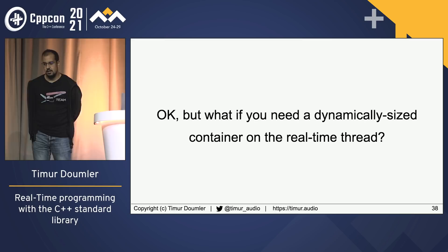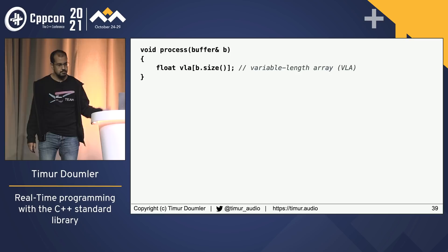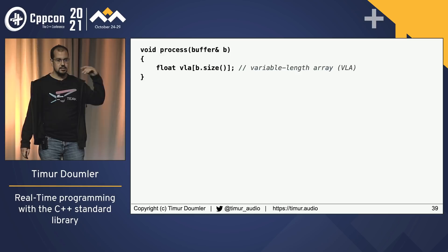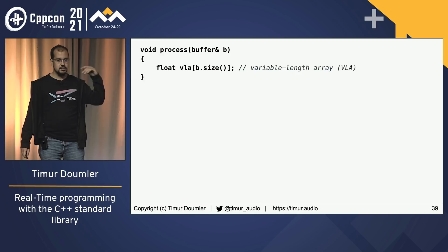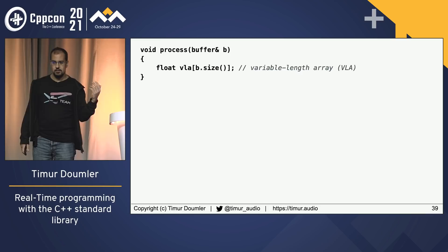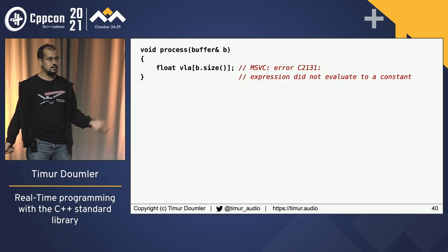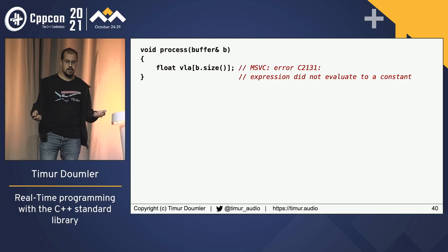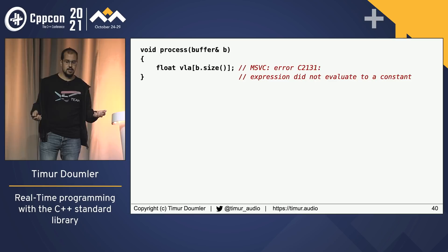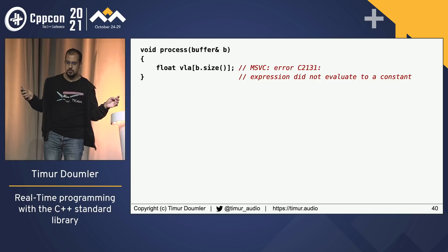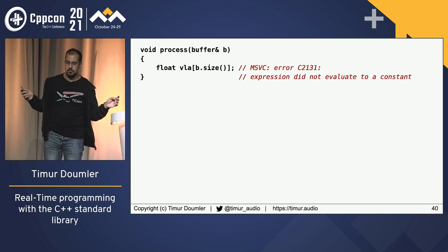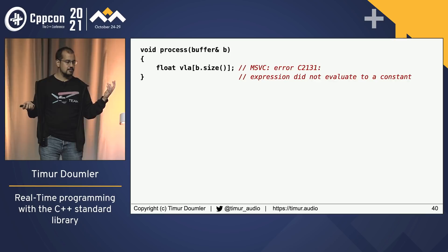What if you do need a dynamically sized container on the real-time thread? One thing I've seen in practice is variable-length arrays (VLAs) — a C array with a runtime size. You can do that in C and in C++ on GCC and Clang, but it doesn't compile on Windows because it's not standard C++. Array size needs to be static in C++. I once had a codebase full of VLAs where the developer claimed it was all portable — I had to manually replace every VLA with a different data structure to port it to Windows. Very painful.